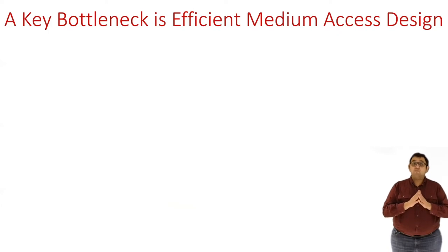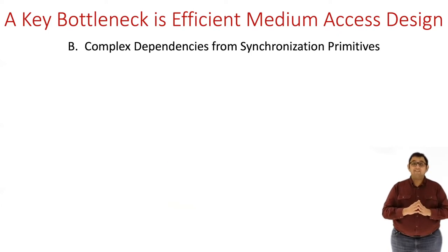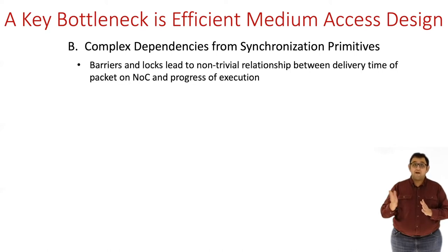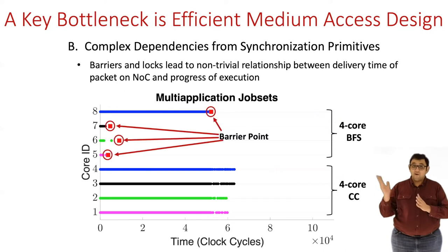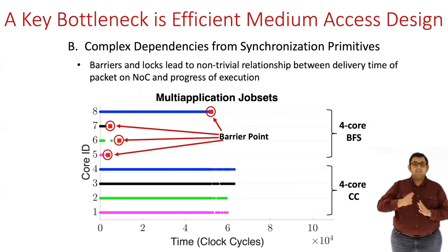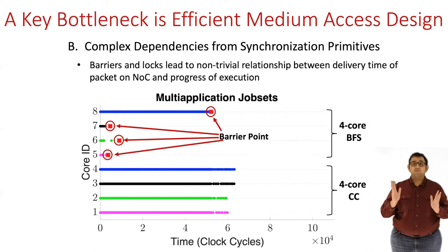The second and more challenging factor is the complex dependencies between the parallel threads of an application. To ensure correctness of the program, programmers use synchronization primitives like locks and barriers. This leads to non-trivial dependencies between the delivery time of packets on the NOC and the progress of execution on the threads. Consider this example where two applications are concurrently running on the multicore. The BFS application has a barrier shown by these squares here. At a high level, barriers block the execution on each core at the barrier points, and none of them can move on until all cores arrive at the barrier.